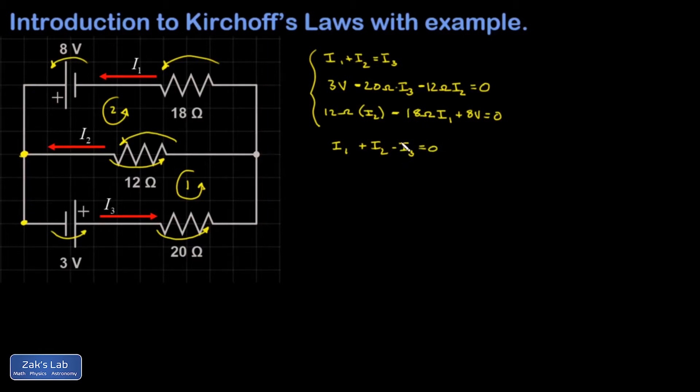In my second equation, I'm going to go ahead and add the 20 i3 and the 12 i2 to the right-hand side and then turn the thing around. So I have 12 i2 plus 20 i3 is equal to 3. And in my third equation, I'll go ahead and write it this way. Negative 18 i1 plus 12 i2 is equal to negative 8.